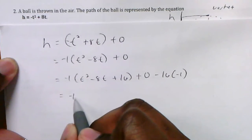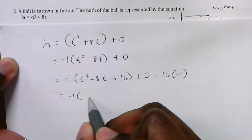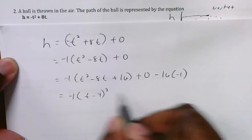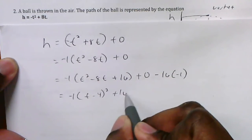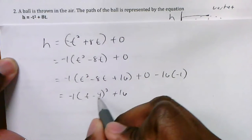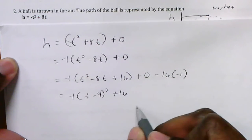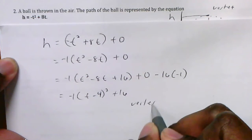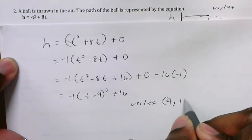So that gives you negative 1 and then this factor would be t take away 4 squared plus 16. So the vertex of that equation would be at positive 4, positive 16.